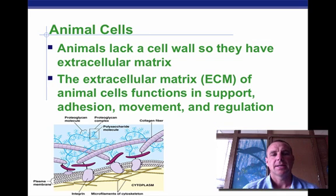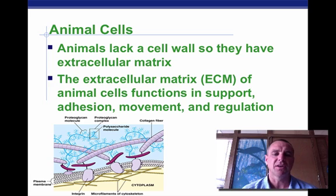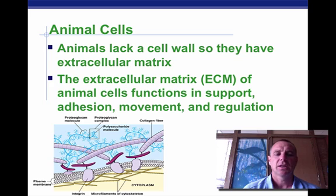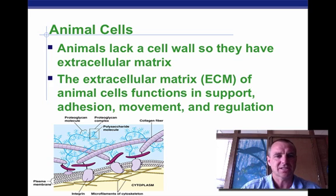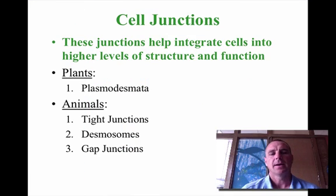The cell wall also gives the plant the ability to resist the force of gravity, which is why plants are able to grow upward even though gravity is pushing down. Animal cells do not have a cell wall, so they have what's called an extracellular matrix, which serves many of the same functions. It consists of collagen fibers and glycoprotein molecules in an extensive network that helps give support to the cell.